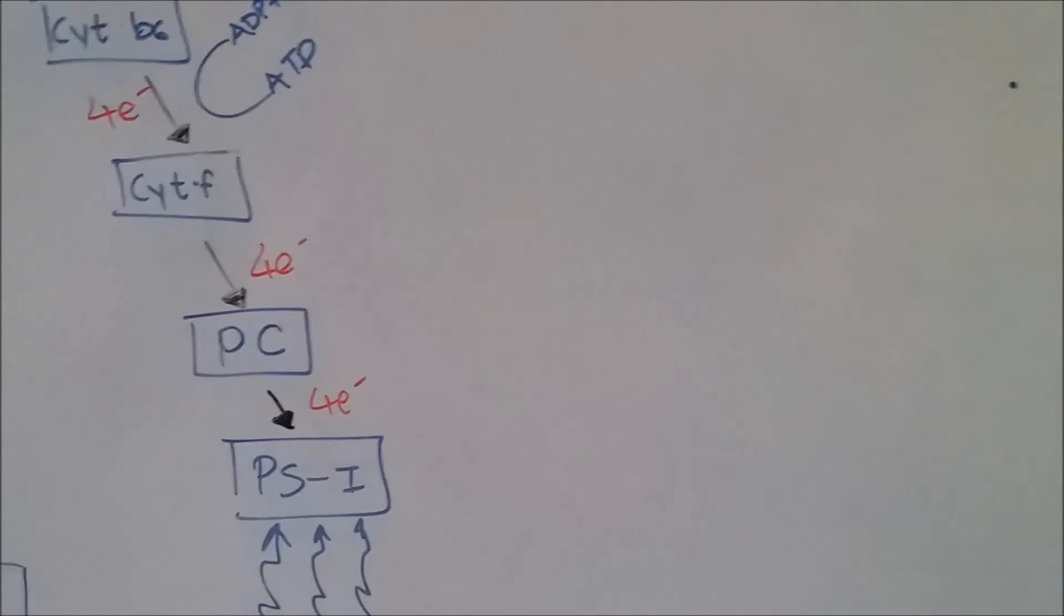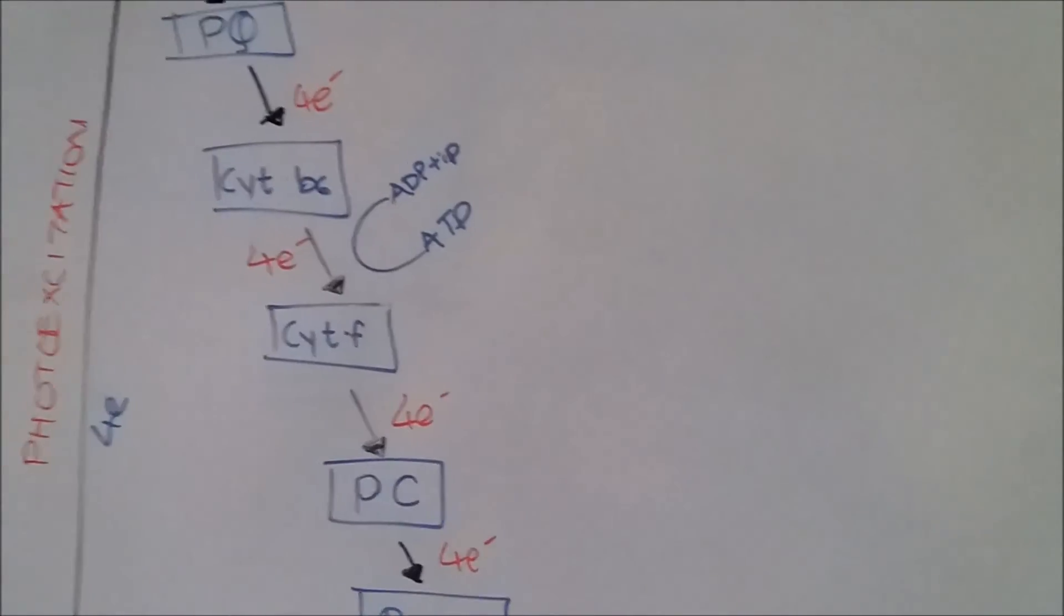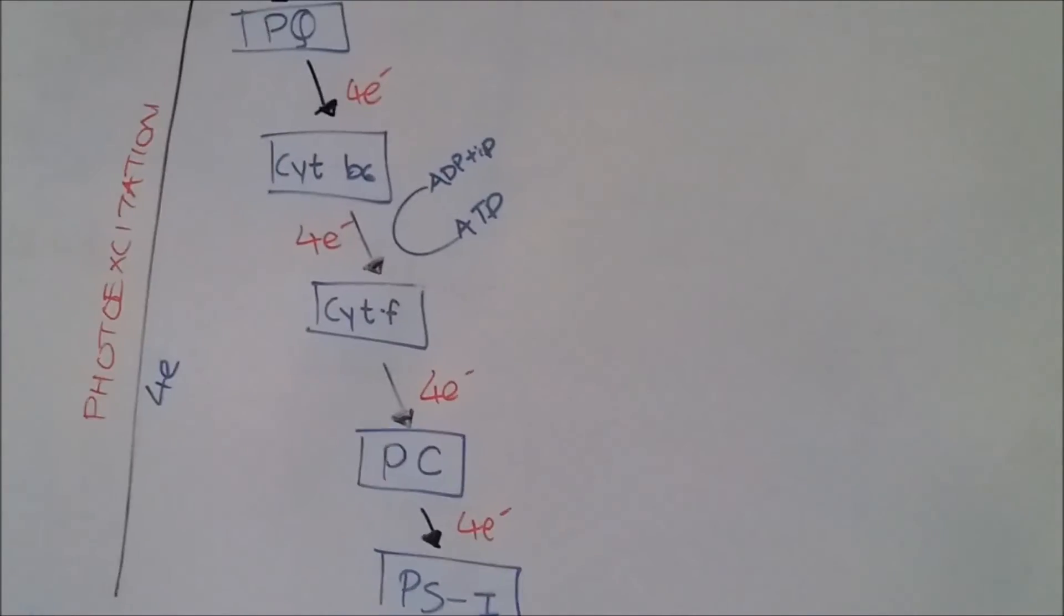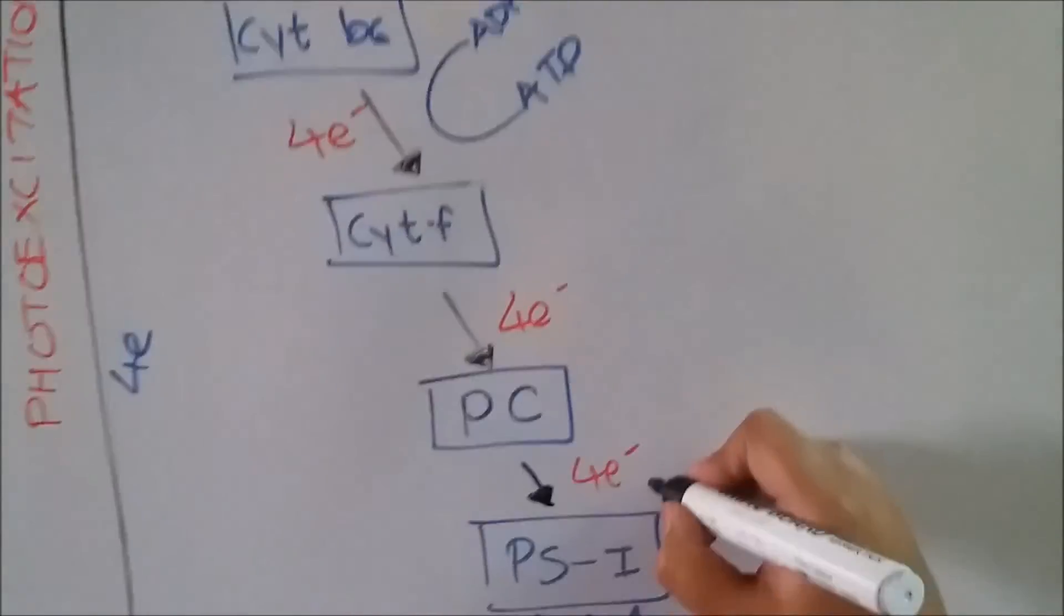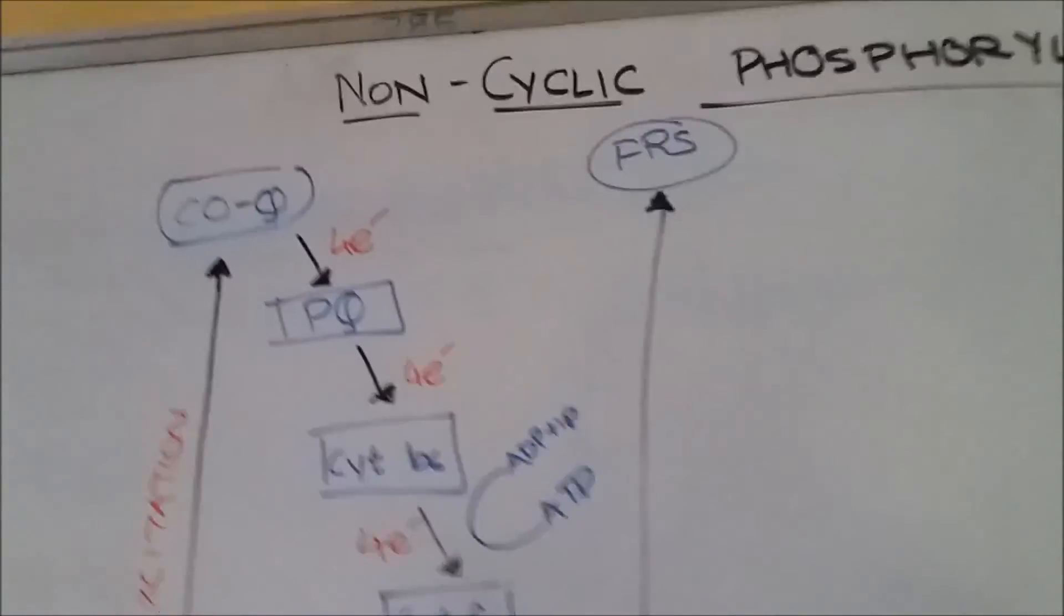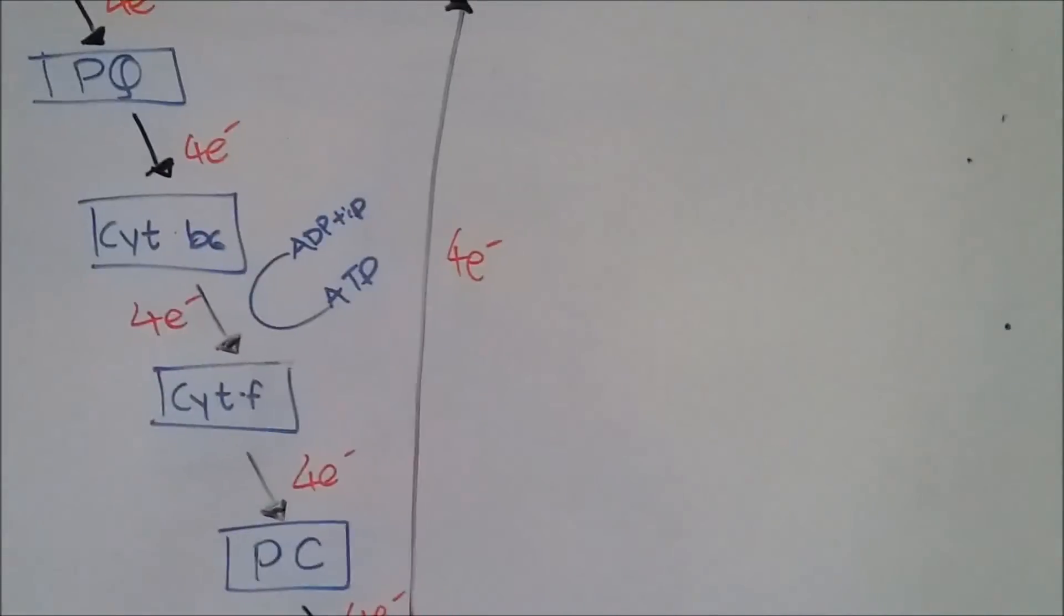An unknown electron acceptor, which we are going to draw, is FRS, ferredoxin reducing substance. Electrons go here.